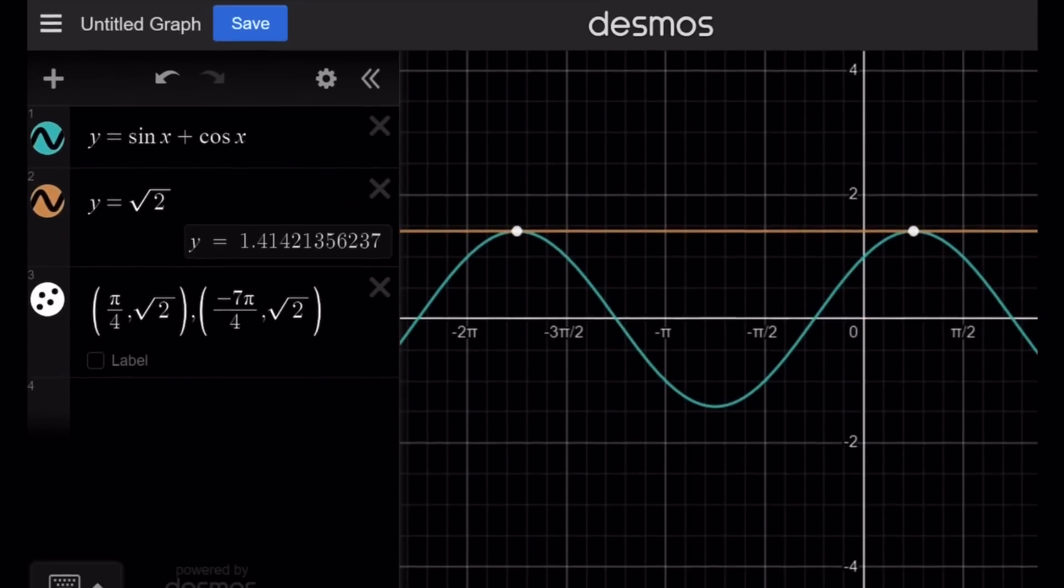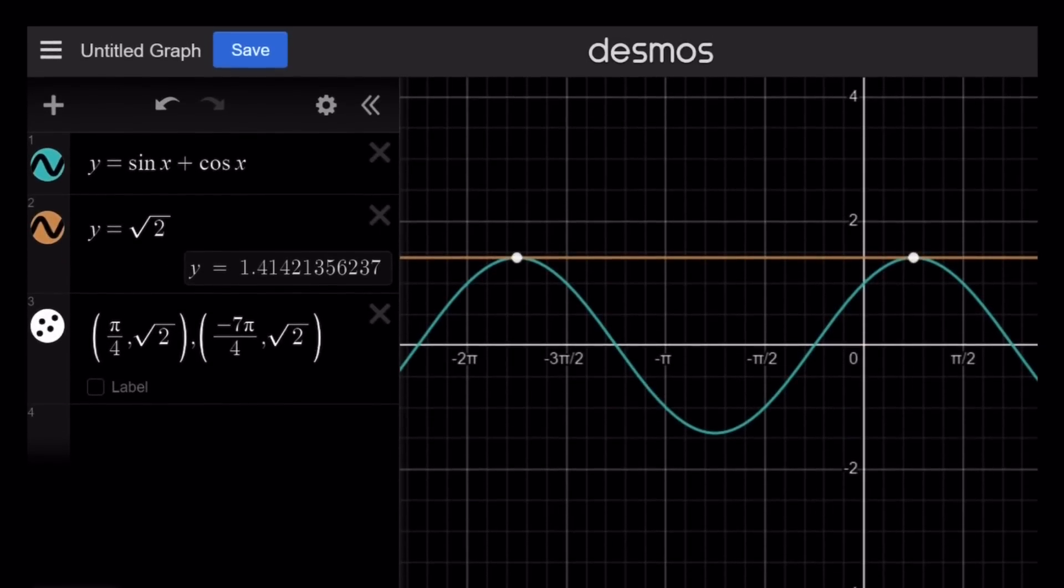And here's the graph of sine x plus cosine x which is actually by the way similar to sine and cosine graph because it's just a multiple of that. And the intersection points, obviously there are infinitely many, but you can see pi over 4 here and negative 7 pi over 4 here as an example.